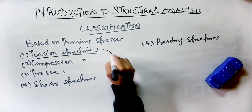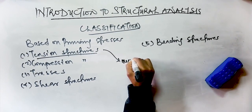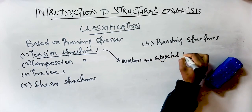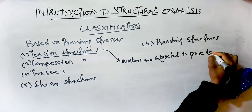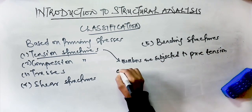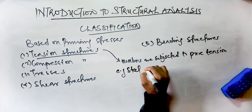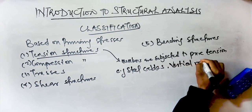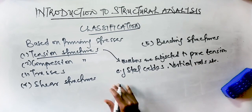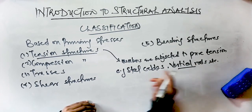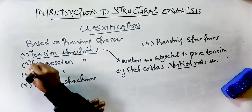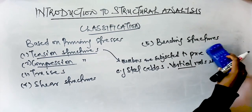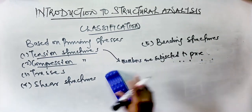The members of tension structures are subjected to pure tension under the action of external loads. These structures are composed mainly of flexible steel cables, frequently employed to support bridges and long-span roofs. Examples of tension structures are steel cables and vertical rods. Vertical rods are used as hangers to support balconies or tanks.